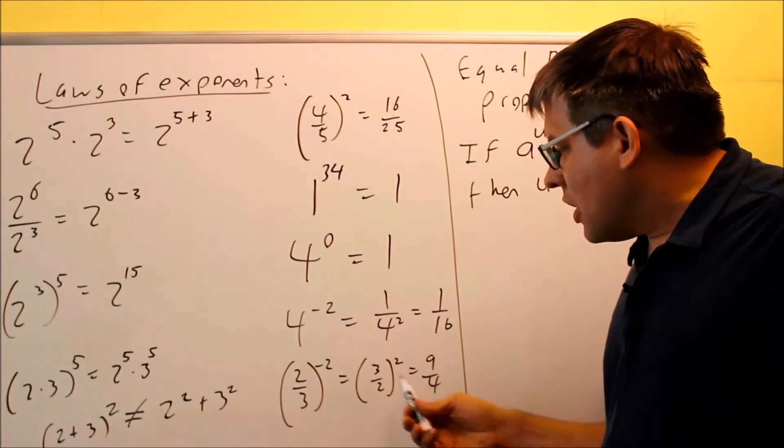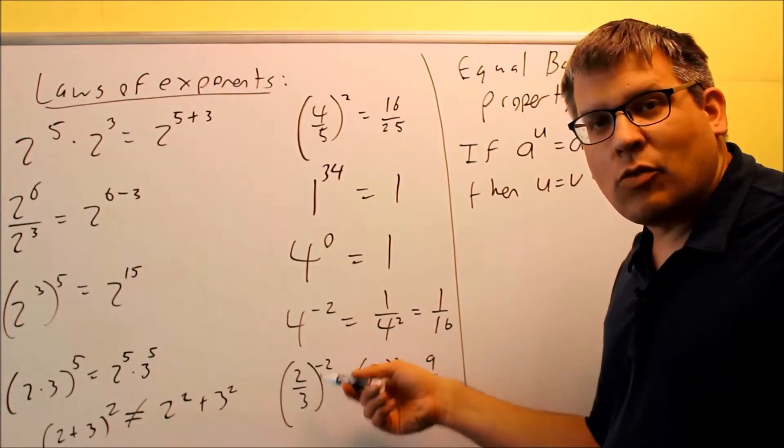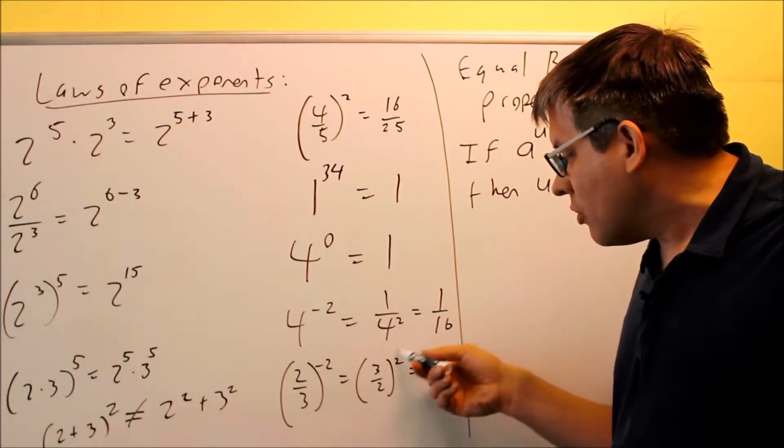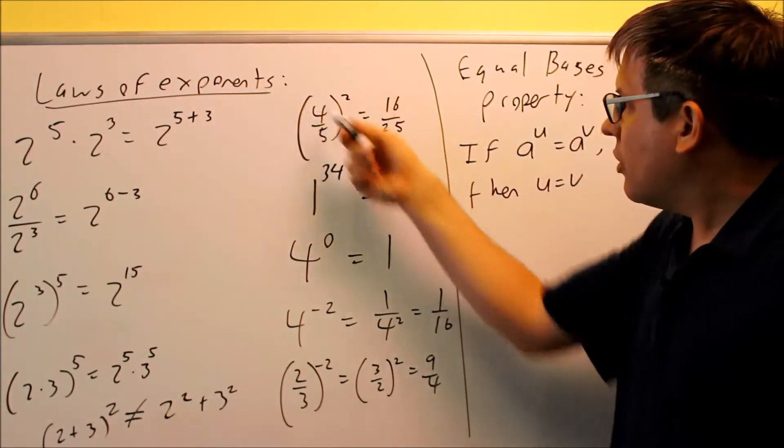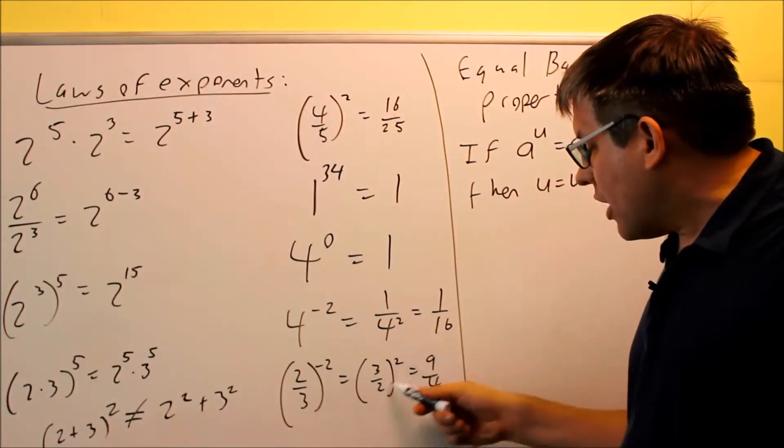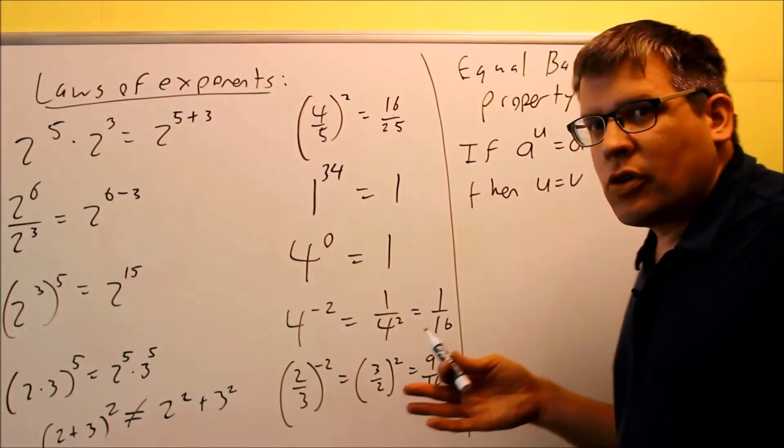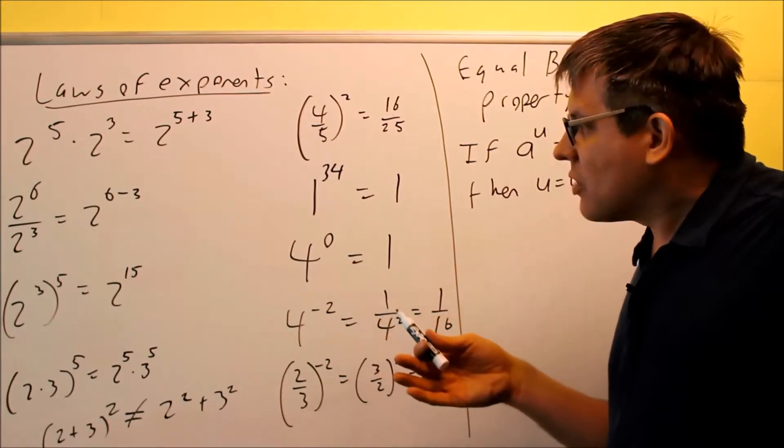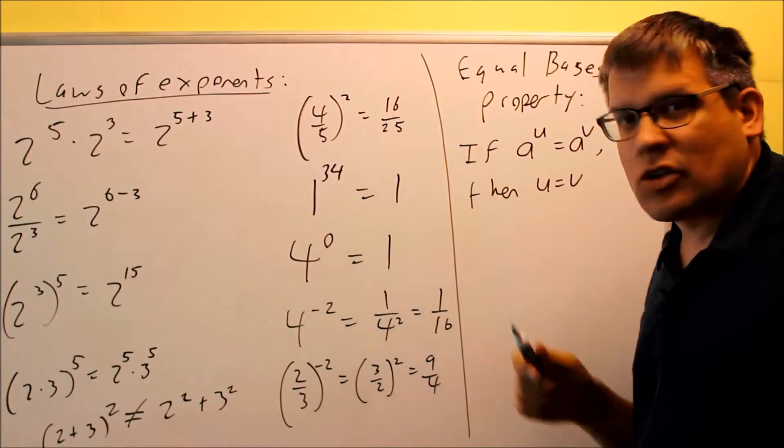For this, if you have a fraction that's raised to a negative number, you can flip the fraction on the inside, and when you flip the fraction, it ends up giving you a positive number on the outside. And then we can do the same thing that we did here. 3 squared is 9, 2 squared is going to give you 4. So that's the list of laws of exponents that should be reviewed, but just in case you haven't seen that for a while, this should get you up on the same page here.